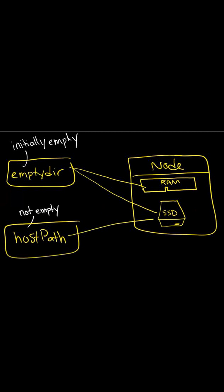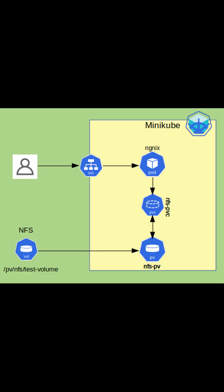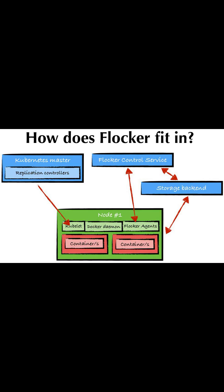AWS Elastic Block Store is a persistent volume and is unmounted when the pod is removed. An NFS volume allows an existing NFS to be mounted into a pod. Flocker is an open source cluster container data volume manager and is used for managing data volumes.